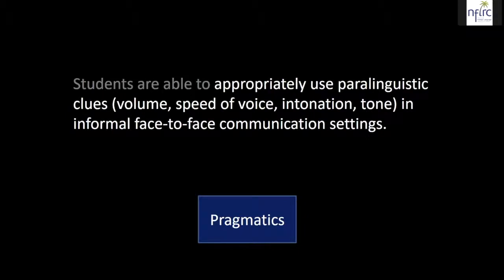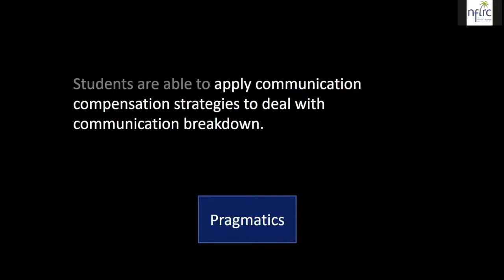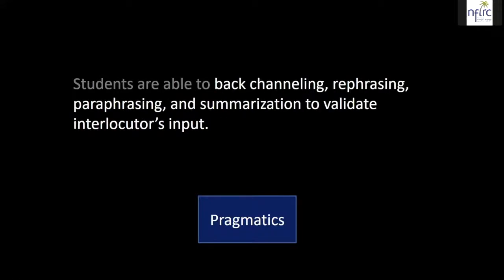Another example: students are able to appropriately use paralinguistic cues like volume, speed of voice, intonation, and tone in communication settings. For example, whispering signals to your interlocutor that you don't want others to hear — but in other cultures, whispering may signal that you have something to hide. Students are also able to apply compensation strategies to deal with communication breakdown — such as showing a confused look, saying 'I'm sorry, I don't understand, can you repeat?' Back-channeling, rephrasing, and paraphrasing to validate the interlocutor's input — like nodding and saying 'mm-hmm' to encourage the person to continue.